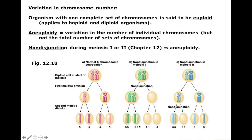In meiosis 1 non-disjunction of sex chromosomes, all gametes are abnormal, producing either Turner (XO) or XXX. In meiosis 2 non-disjunction, half the gametes are normal and half are abnormal — producing a quarter Turner (XO) or a quarter XXX.